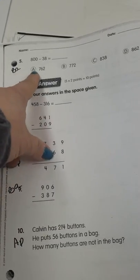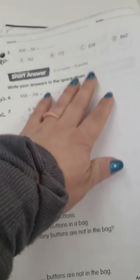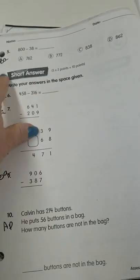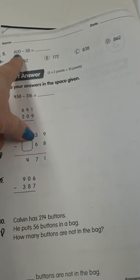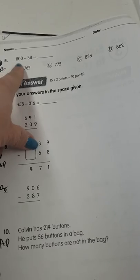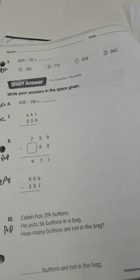Number 5, you're subtracting. Make sure you write this out. Lock your numbers up because they are trying to trick you here. There's 3 place values here. There's 2 here. So make sure you're looking at that.